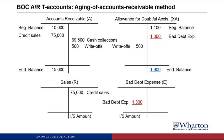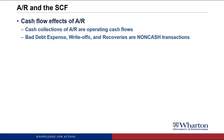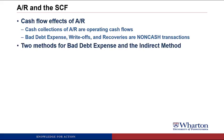That ends our example looking at the different methods for computing bad debt expense. Next, I want to talk about how accounts receivable and bad debt show up on the statement of cash flows. Cash collections of accounts receivable are operating cash flows. Bad debt expense, write-offs, and recoveries are all non-cash transactions — when I say recoveries are non-cash, I mean the part where we restore the receivables and restore the allowance, not the part where we actually recover the cash.